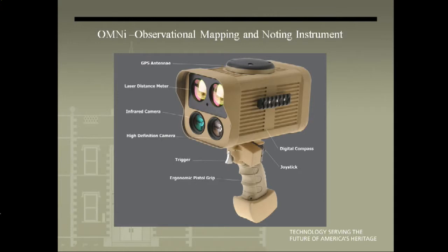Now I'd like to talk about an emergent data collection system known as the OMNI, which stands for Observational Mapping and Noting Instrument. It's an innovative technology designed and developed through a cooperative research and development agreement between the U.S. Army Corps of Engineers and Compass Systems, an engineering firm. Originally developed to record archaeological sites, it has now been adapted by forensic engineers and the U.S. Army for reconnaissance missions. The OMNI device allows the user to collect precise geo-referenced intelligence while tagging the GPS location with voice, photo, audio, video, environmental data, and text notes.